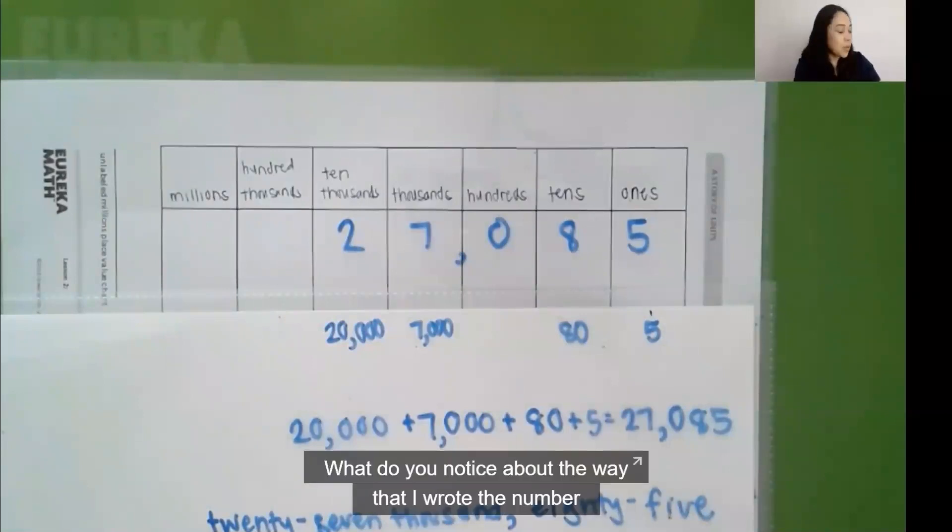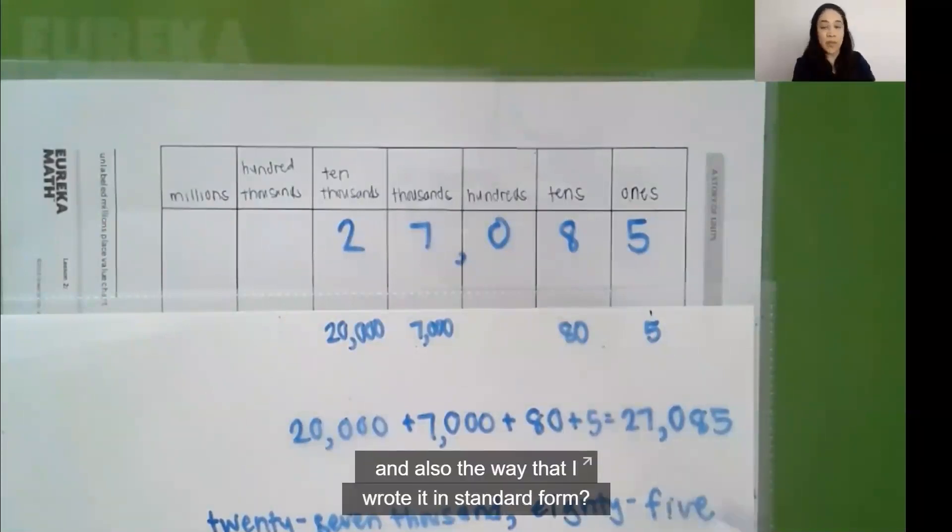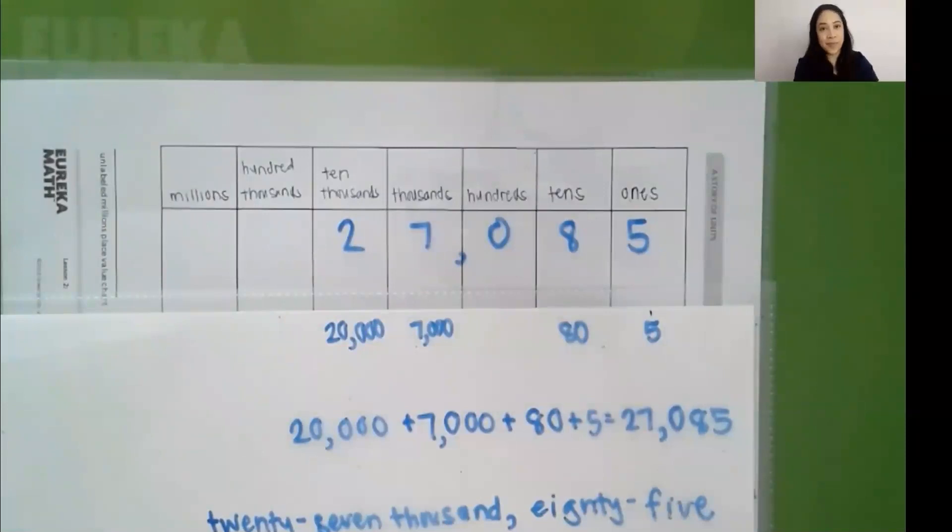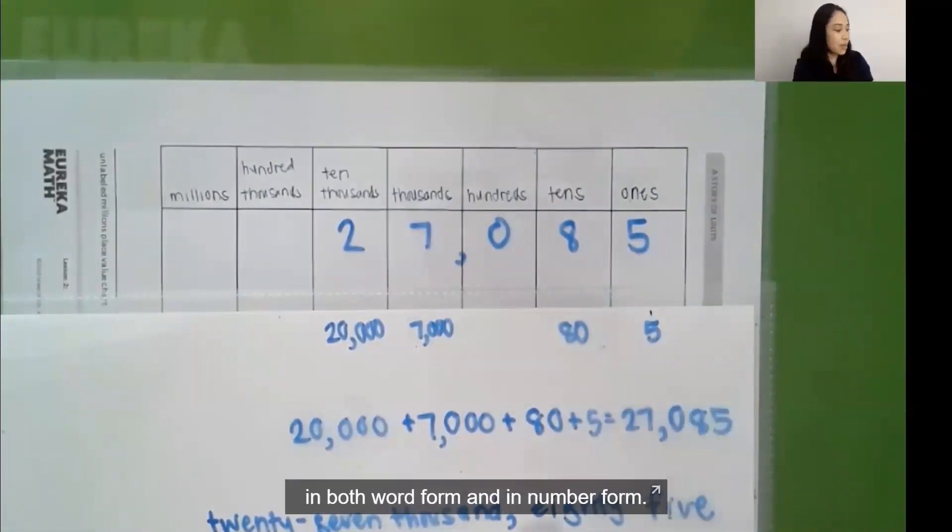What do you notice about the way that I wrote the number in word form and also the way that I wrote it in standard form? We can see that there is a comma after 27 in both word form and in number form.